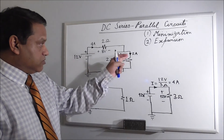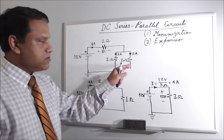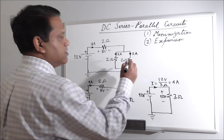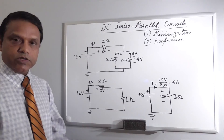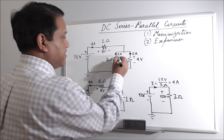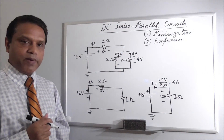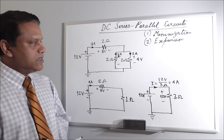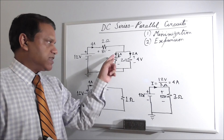Using Ohm's Law on one parallel branch: V = IR = 2 amperes × 2 ohms = 4 volts. Since parallel branches always have the same voltage, the other branch is also 4 volts — you don't even need to calculate it separately.